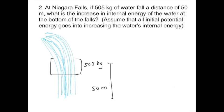Number 2. At Niagara Falls, if 505 kilograms of water fall a distance of 50 meters, what is the increase in internal energy of the water at the bottom of the falls? And we're assuming that in this case, all of the initial potential energy goes into increasing the water's internal energy. So the water doesn't have any kinetic energy at the bottom.